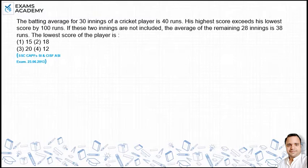The batting average of 30 innings of a cricket player is 40. His highest score exceeds the lowest score by 100. If these two innings are not included, the average of the remaining 28 innings is 38. Find the lowest score of the player.